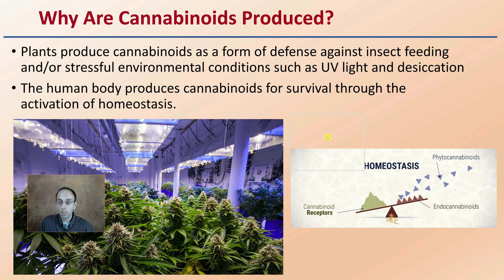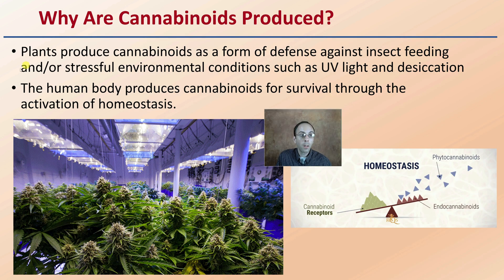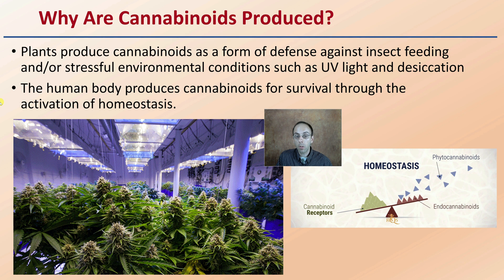Why are cannabinoids produced? Plants produce cannabinoids as a form of defense against insect feeding and stressful environmental conditions, which can include UV light and water stress in the form of desiccation. The human body also produces cannabinoids for survival through activation of homeostasis — that balancing mechanism. Our cannabinoid receptors and phytocannabinoids work together in a check-and-balance system to maintain the all-important homeostasis within any living system.